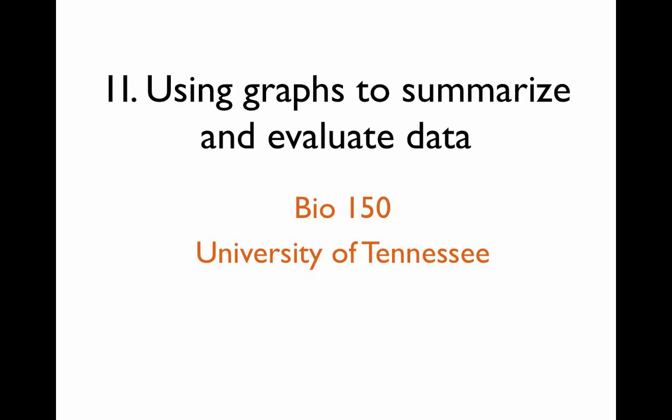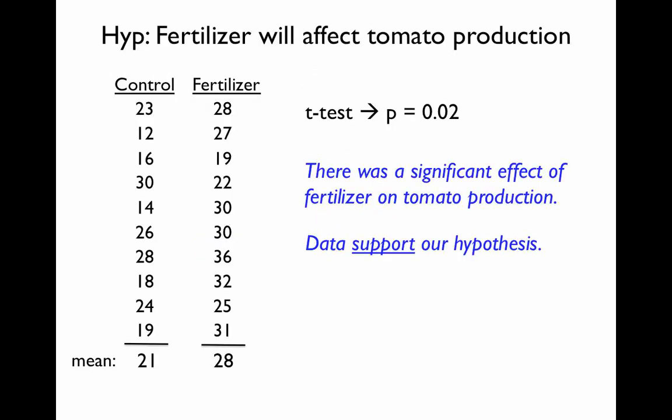In the first video, we talked about an experiment designed to test the hypothesis that fertilizer would have an effect on tomato production. These are the data we collected, and when we used a statistical test on the data, we got a P of 0.02, which indicated that there was a significant effect of fertilizer on tomato production.